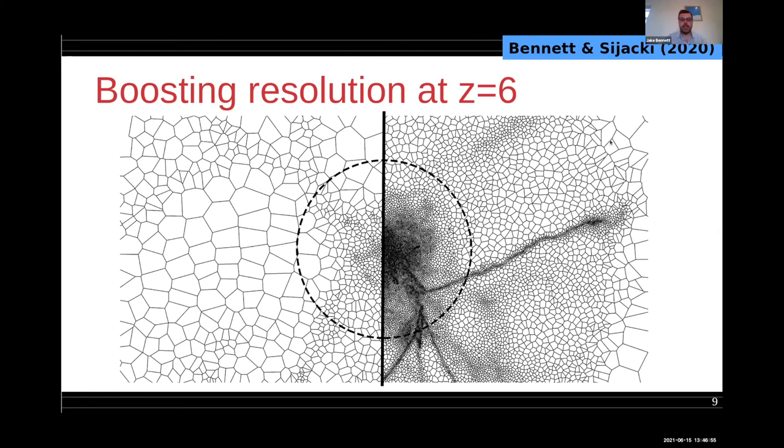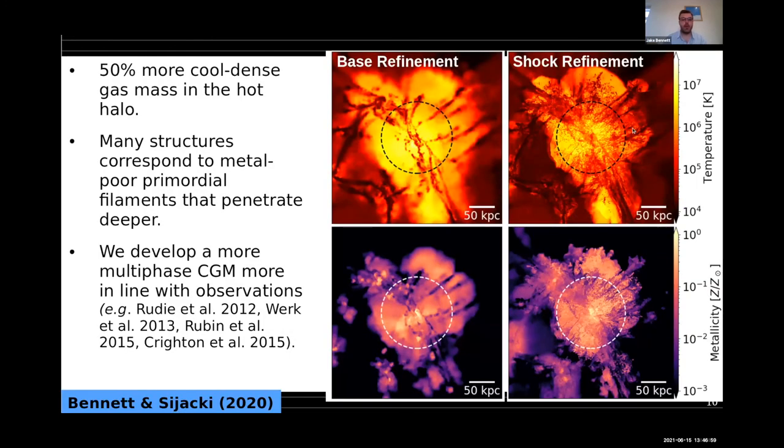The effect of what actually happens thermodynamically is you get a lot more cold gas embedded within the hot halo, a lot of it coming from metal poor primordial filaments penetrating. This is at high redshift, but also you get cold clouds condensing out of the hot halo. So you develop a much more multi-phase CGM, which eventually is what becomes the intracluster medium of a higher redshift galaxy cluster later on.